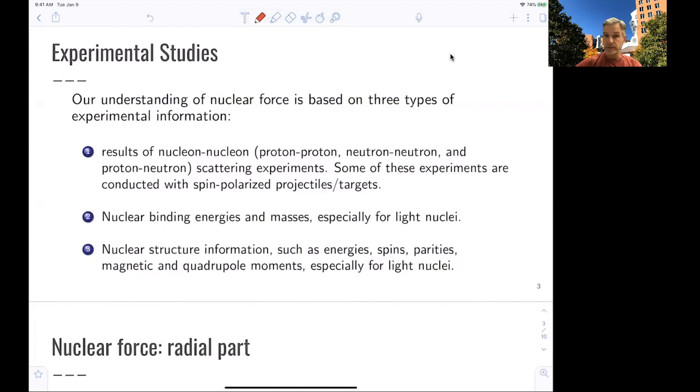For example, a polarized electron being used to probe the structure of a nucleus. Nuclear binding energies, we've seen those again. And the precision measurement of masses, they give us insight, especially useful for the light nuclei. And the nuclear structure information, such as energies, energy levels, spin, parities, magnetic and quadrupole moments, again, especially of the light nuclei. And there's many more to be named in more detail. But conceptually, those are the three kind of pieces of information we have.